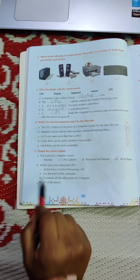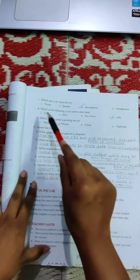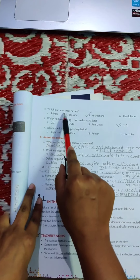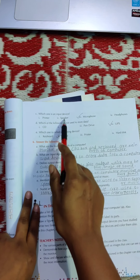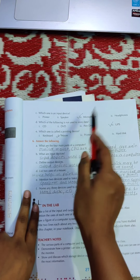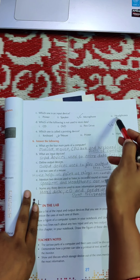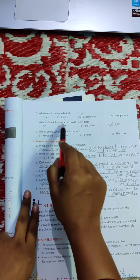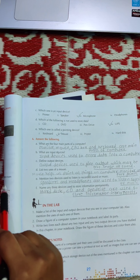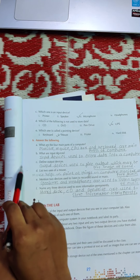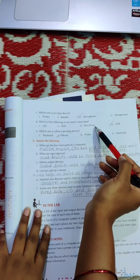Then Printer. Printer is used to take out a printout. Printer ka use kis ke liye kiya jata hai? It is used to take a copy, usually on a sheet. Suppose we want anything on paper — for that we will use a printer. For example, you have a PDF file and you want it on paper, so for that purpose you will take a printout from the printer.